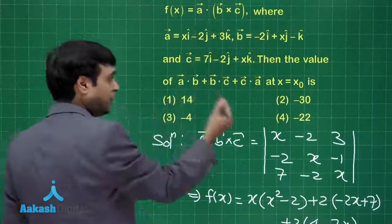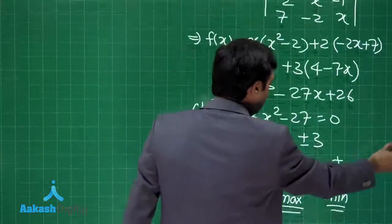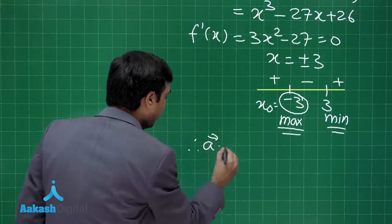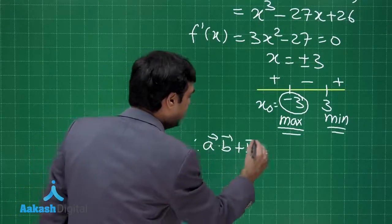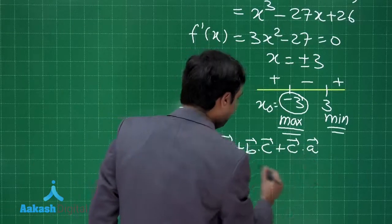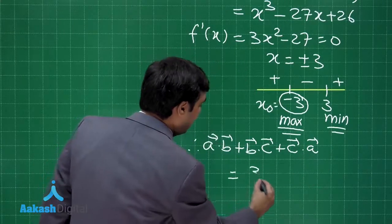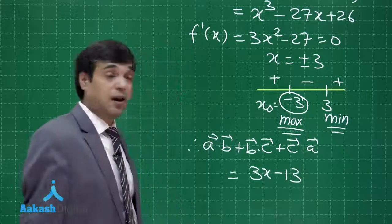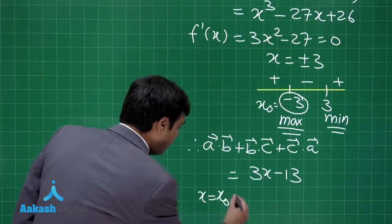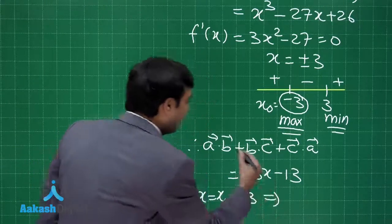Next, so we find a dot b, b dot c, c dot a with the help of these three vectors, and we conclude that a dot b plus b dot c plus c dot a is equal to 3x minus 13.